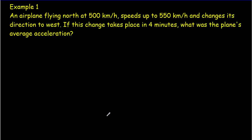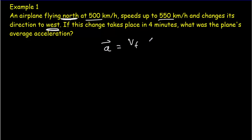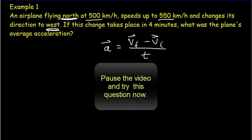In this example, we've got a plane speeding up from 500 kilometers per hour to 550 kilometers per hour. But there's actually a bigger change in its motion because it's also changing direction from north to west. So its acceleration depends not just on the change in speed but also on the change in direction. Use the definition of acceleration — the final velocity minus the initial velocity as vectors divided by the time it took to make that change in velocity. Pause the video, try the question, come back for the answer.